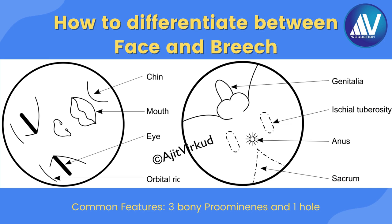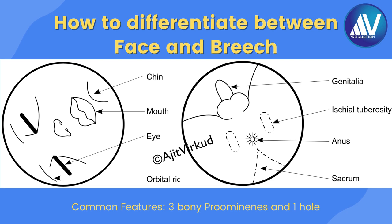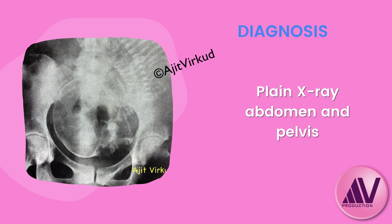During internal examination, it is important to know how to differentiate between face and breech. Face presentation may be misdiagnosed as a frank breech presentation on digital examination since the latter is more commonly encountered and therefore expected. Both presentations are characterized by soft tissues with an orifice; however, careful palpation will identify the bony facial structures and lead to the correct diagnosis. In face presentation, the bony protuberances are mentum and malar prominences forming a triangle and the opening in the center is the mouth. With ultrasound readily available in most delivery units, confirmation of the type of malpresentation — breech or face — is easily obtained if needed.